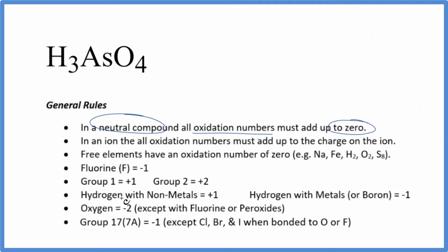So for hydrogen, we're going to have a plus one as the oxidation number. That's for each hydrogen. The arsenic, we don't know what that is. And oxygen, that's almost always minus two, with a few exceptions. So each oxygen atom has an oxidation number of minus two.